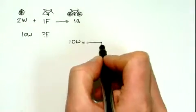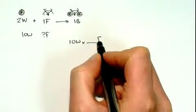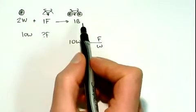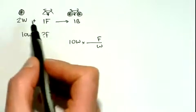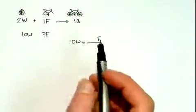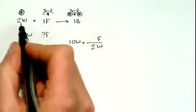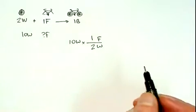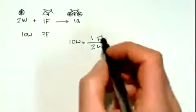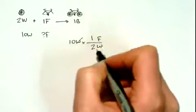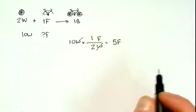So what I can do is exactly that — I want to get rid of wheels and get this in terms of frames. And from this balanced equation, it takes two wheels plus one frame to make one bike. So I can just look at the ratios here, and I see for every two wheels I require one frame. I've been able to get this conversion factor from my balanced equation. So if I do this math, wheels cancel out, and I'm left with five frames that would be required.